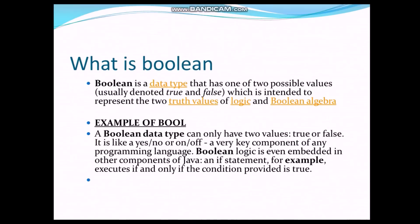What is Boolean? Boolean is a data type that has one of two possible values, usually denoted as true or false, which is intended to represent the truth value of logic and Boolean algebra. A Boolean data type can also have two values: true or false — it's like yes or no, on or off. A very key component of any programming language. Boolean logic is even embedded in other components of Java. An if statement, for example, executes if and only if the condition provided is true.